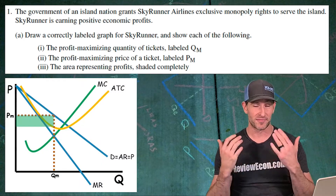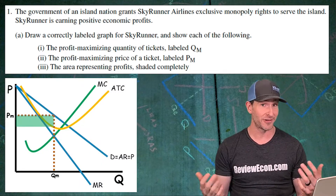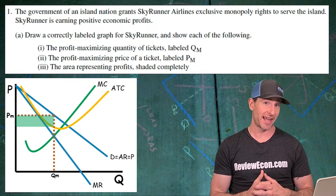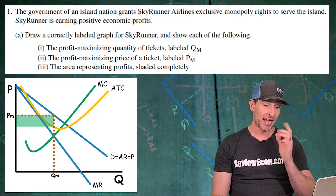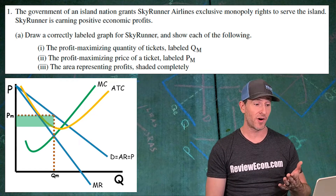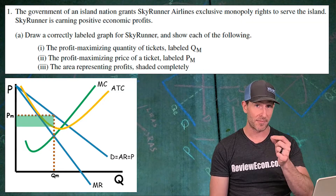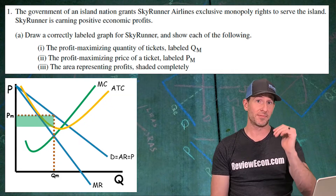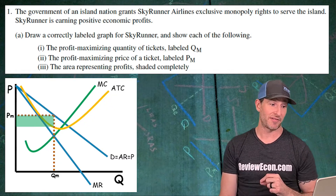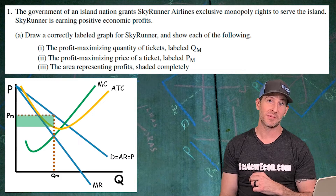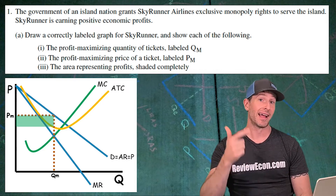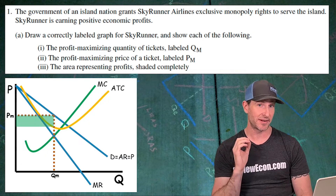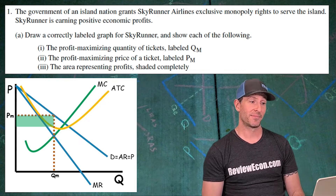We have our downward sloping demand curve with marginal revenue below. This is a monopoly graph showing an economic profit. ATC is below the demand curve at the profit-maximizing quantity. You have to have that profit-maximizing quantity marked — it's QM. You find it where MR equals MC and drop down to find that quantity. For the price, go up to the demand curve and over to the price axis, label that PM. The profit box is the gap between the demand curve and the ATC curve, shaded completely.